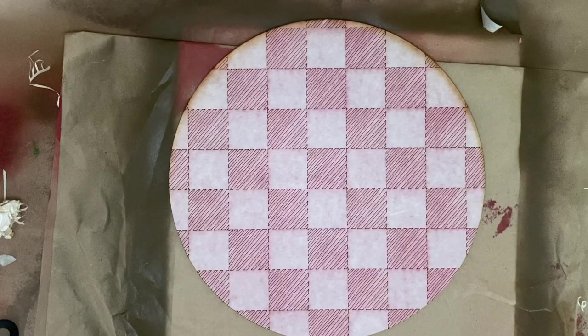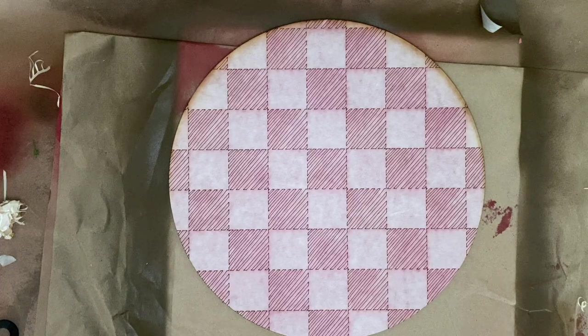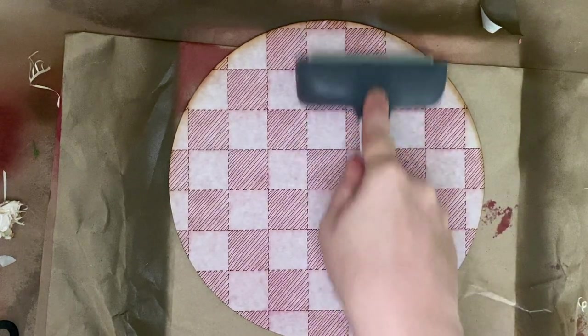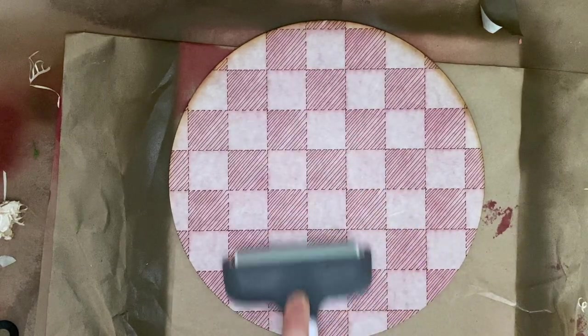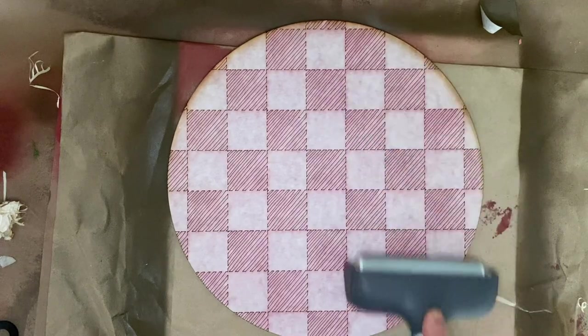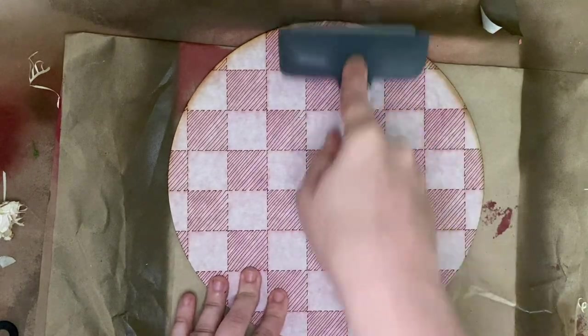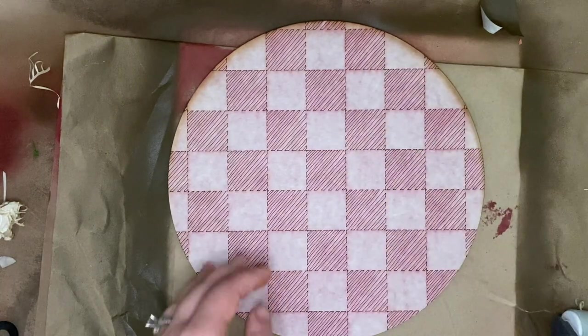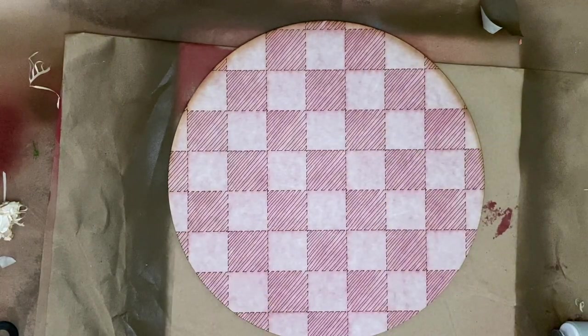Okay, so we are scored and cut. We're going to go ahead and roll this down one more time. We're going to make sure there is no bubbles anywhere. And then we are going to start lifting some of the masking. You are going to need a weeding tool of some sort.